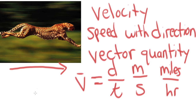Sometimes you'll hear about instantaneous velocity, which is the velocity that something has at any one instant. If you get stopped for speeding, you are ticketed for your instantaneous velocity — the velocity you were traveling at that exact instant. Your average velocity is probably well below the speed limit, but you are getting a ticket for instantaneous velocity.